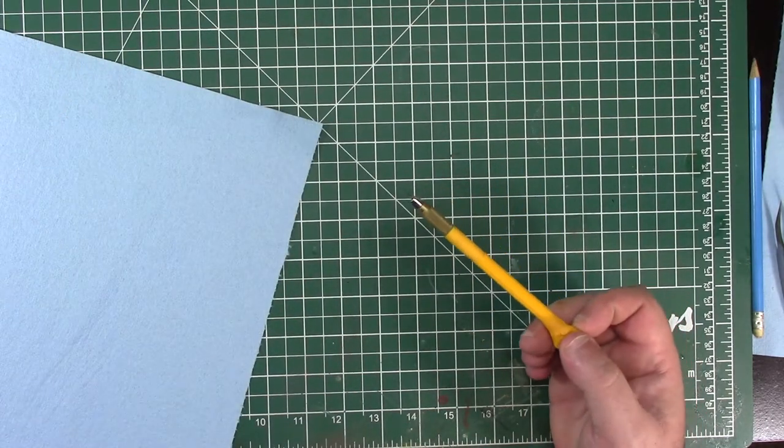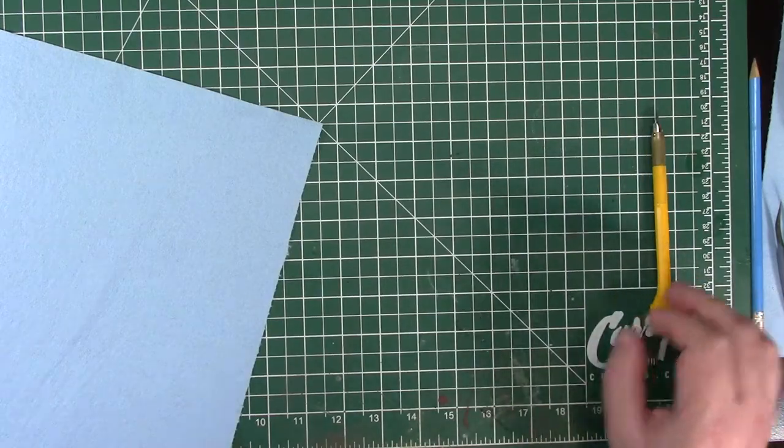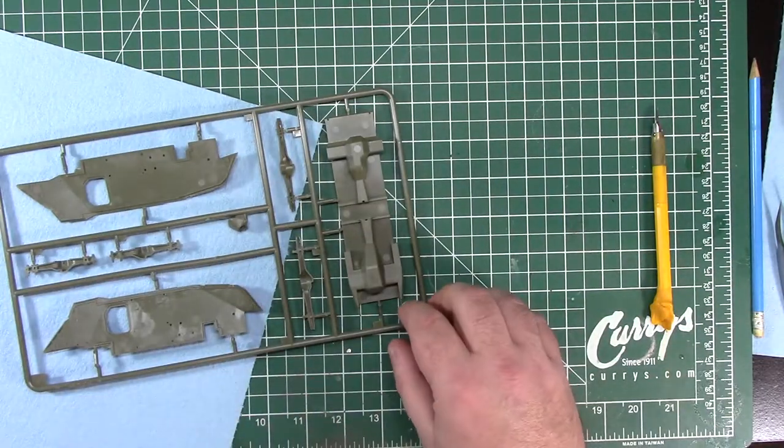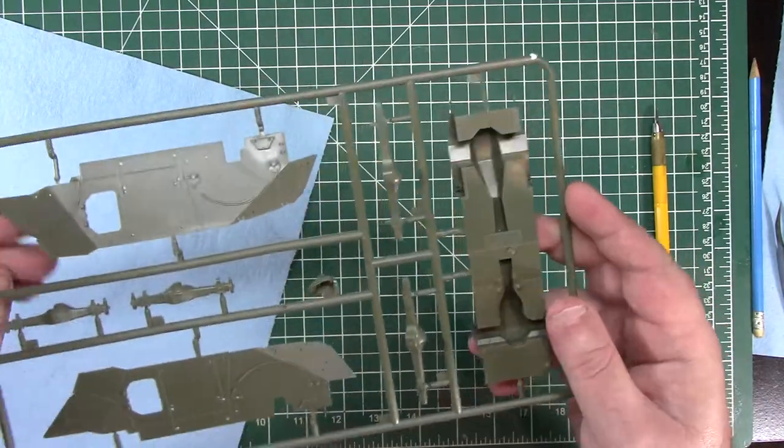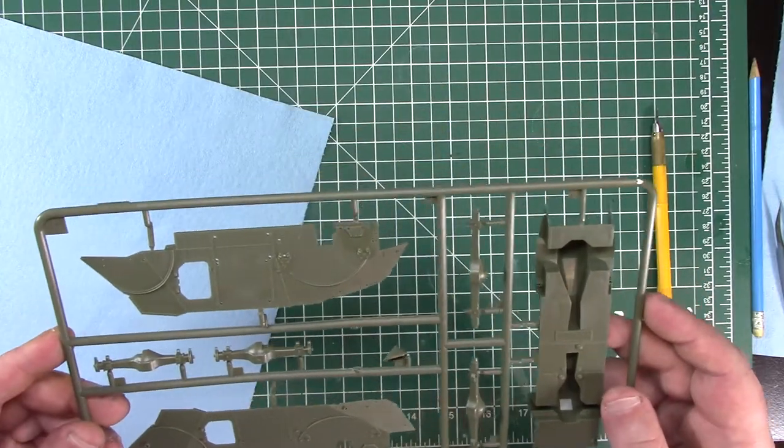Anyway, we'll move on with the actual pieces, and that's the bottom of the hull and the hull sides and some of the suspension.